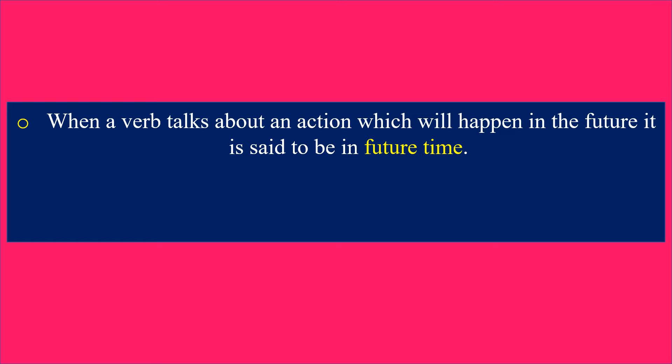See the first point. When your verb talks about an action which will happen in the future, it is said to be in future time. One verb is one action which will be in future time.